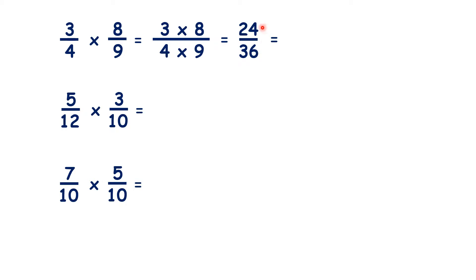But how can we simplify 24 thirty-sixths? Both 24 and 36 are multiples of 12, so if we divide both the numerator and denominator by 12, we can simplify to two-thirds.